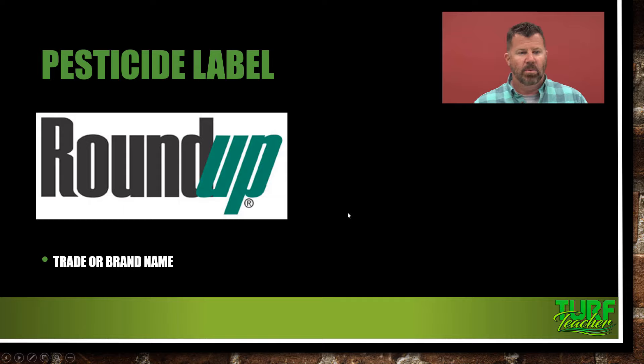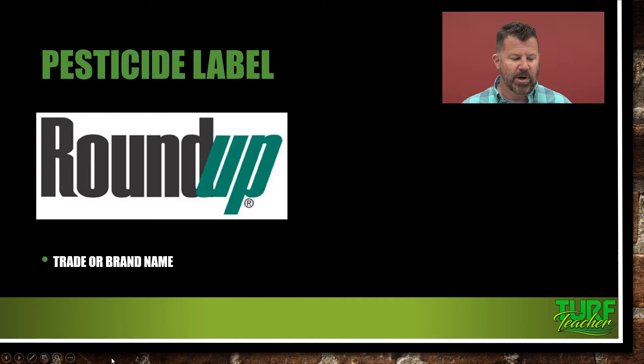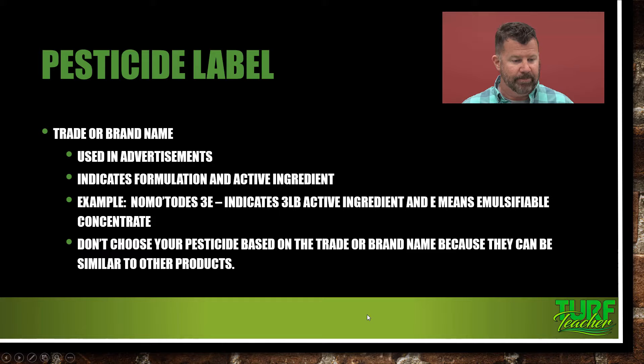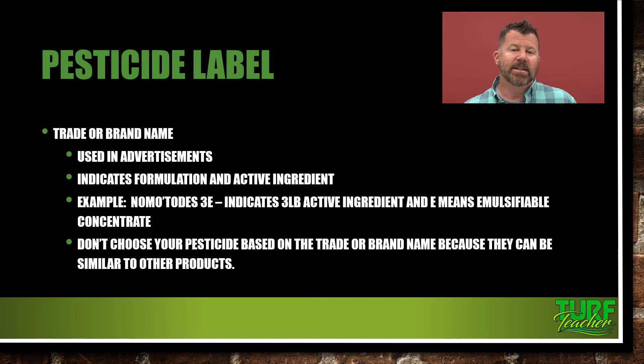Trade name or brand name — we're all familiar with Roundup. Roundup is that trade name, that brand name marketed to it through TV commercials and store displays. It's used in advertisement and indicates the formulation and the active ingredient. For example, Nematodes 3E — starting on page 58 — indicates that there are three pounds of active ingredient and the 'E' means it is emulsifiable concentrate. We'll learn more about pesticide formulations in Chapter 5.